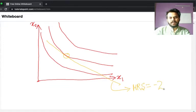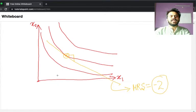What does this mean? This means that I am ready to give up two units of good 2 in order to gain one unit of good 1. If you look at this point and try to understand the meaning of the slope, if I go one unit forward and I have to go two units down, that is the meaning of minus 2. So it means that I am ready to give up two units of my good 2 in order to gain one unit of good 1 at this very point.